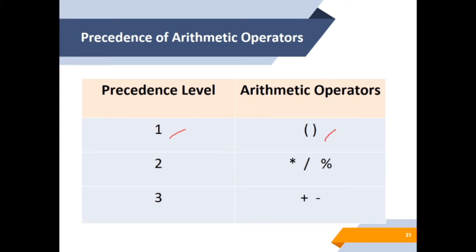We look at the precedence of arithmetic operators. Precedence level 1: the first thing you must focus on when you receive any expression is the brackets. Then, followed by multiplication, division, and modulus. And the last one is the plus and the subtraction operation.